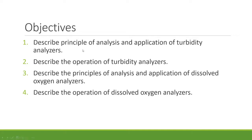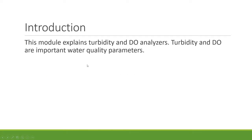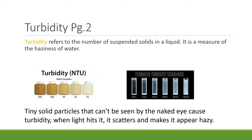Our objectives today cover the principle of analysis and application of turbidity analyzers. Turbidity analyzers measure the haziness of water, making them an important water quality analyzer. We'll also cover the operation of turbidity and dissolved oxygen analyzers. This module explains both, which are very important water quality parameters, specifically for drinking water and wastewater. Turbidity, by definition, refers to the number of suspended solids in a liquid — in layman's terms, the measure of the haziness of water.